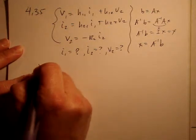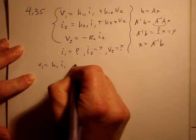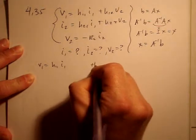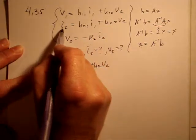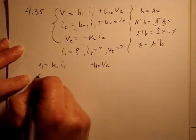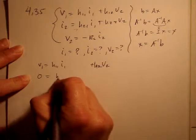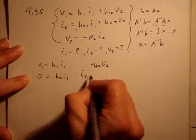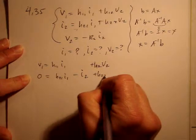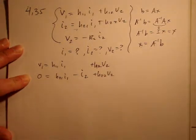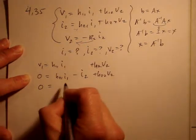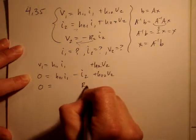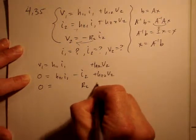First one is already in the right form. So V1, H11, I1, nothing times I2, H12, V2. Second equation, we just need to get I2 on the other side. So we have 0 equals H21 I1 minus I2 plus H22 V2. And then this third one, let's move everything to the left-hand side so it's all positive. And we'll still have the 0 equals nothing times I1, RL times I2, and plus V2.